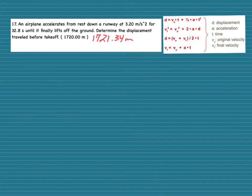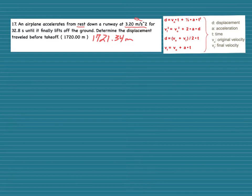Number 17: an airplane is accelerating from rest down the runway at 3.20 meters per second squared for 32.8 seconds — determine the displacement traveled before takeoff. From rest means initial velocity is zero. The 3.20 meters per second squared is acceleration, 32.8 seconds is time, and displacement is what I'm solving for.